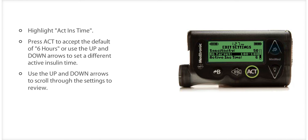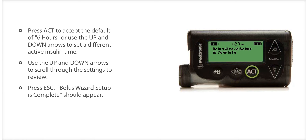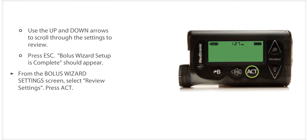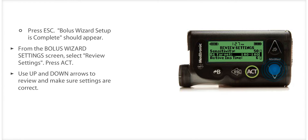You will now see the Edit Settings screen displaying the Bolus Wizard settings. Use the arrows to scroll through and view all of the settings. You have now completed programming the Bolus Wizard feature. Press ESC and the words Bolus Wizard Setup is Complete should appear. If the programming is not complete, a Missing Info message will appear — follow the instructions to fill in the missing information. Take a moment and practice programming your Bolus Wizard now. Before moving on, it is a good idea to review your Bolus Wizard settings. To get to the Review Settings screen, select Review Settings on the Bolus Wizard Setup screen and press ACT. Scroll through the settings and make sure they are set correctly. When you are finished, press ESC.